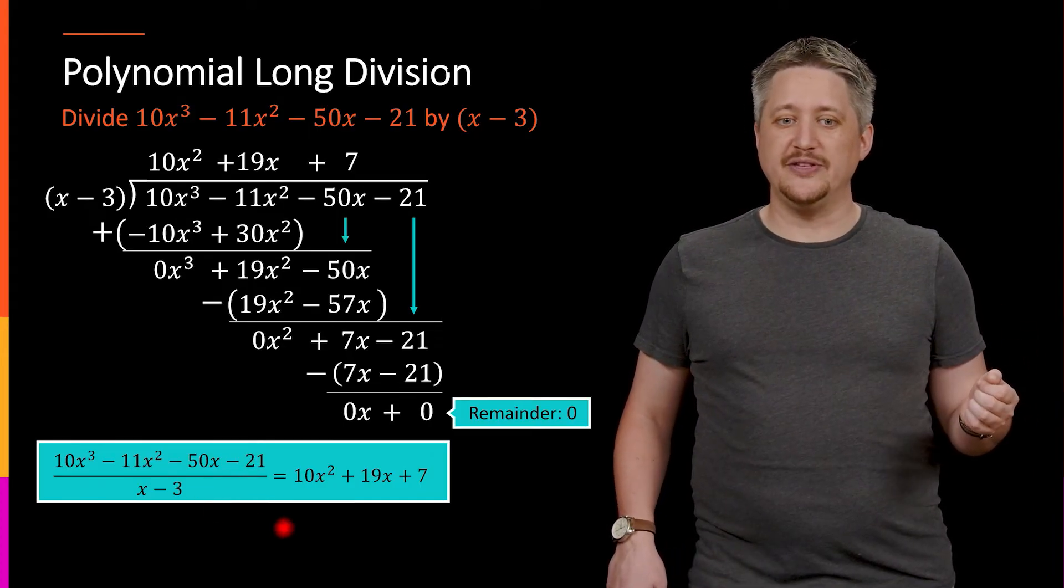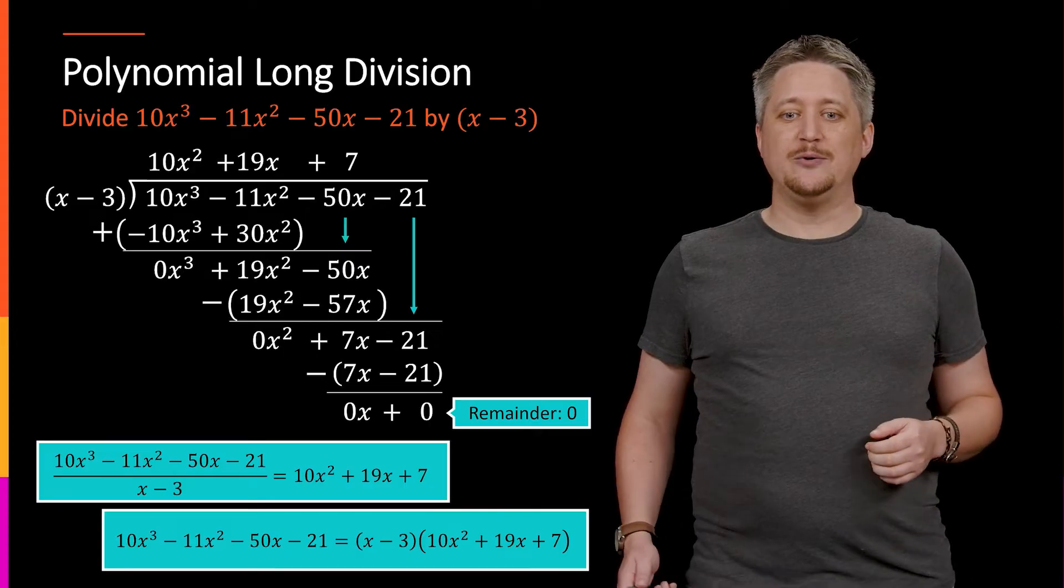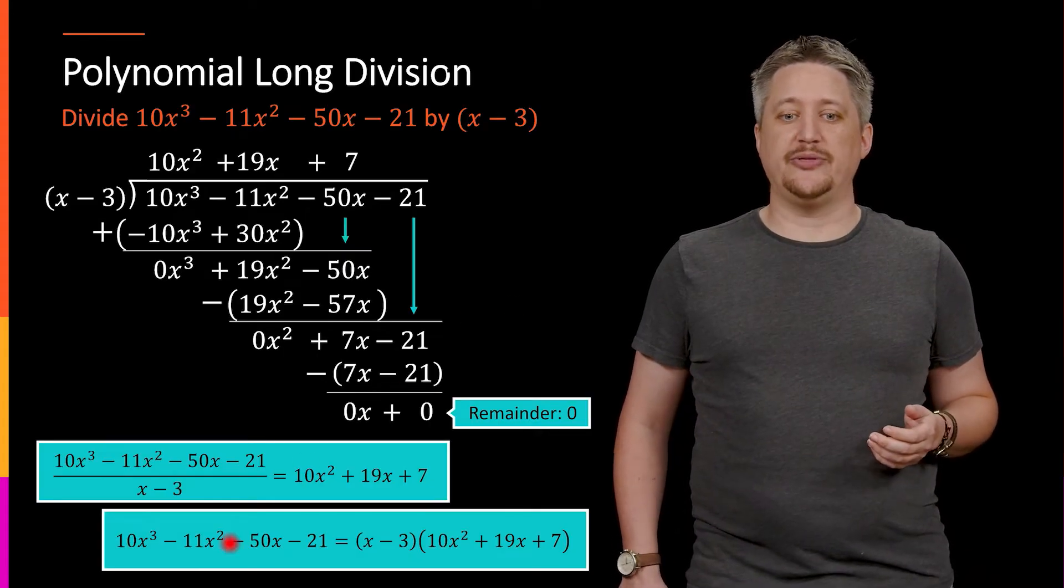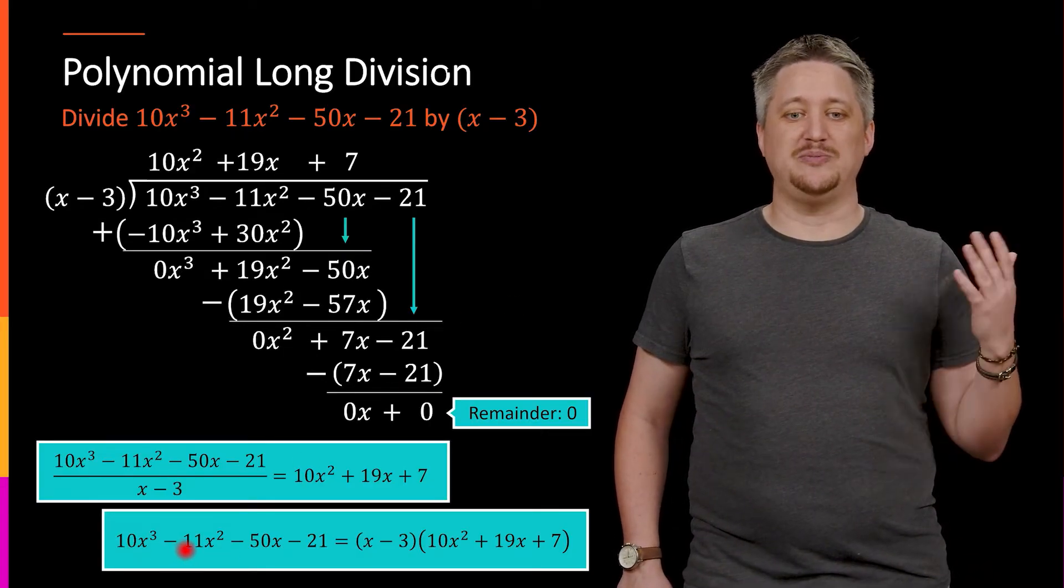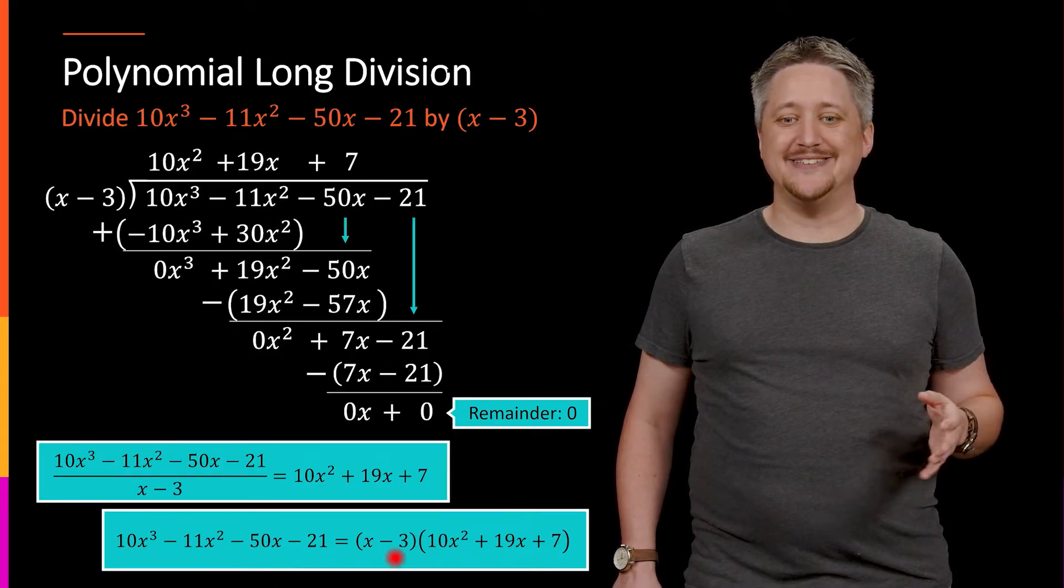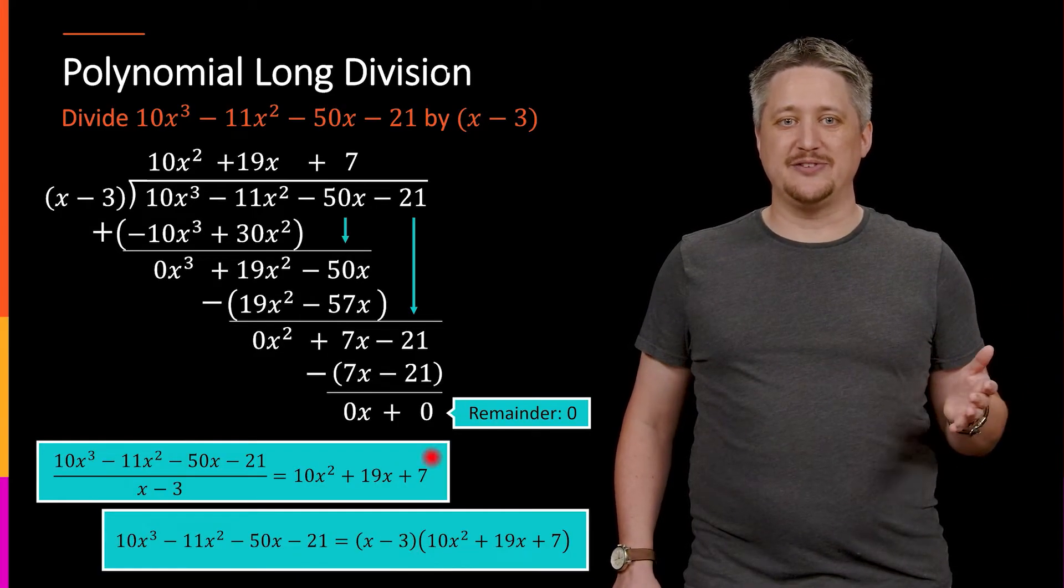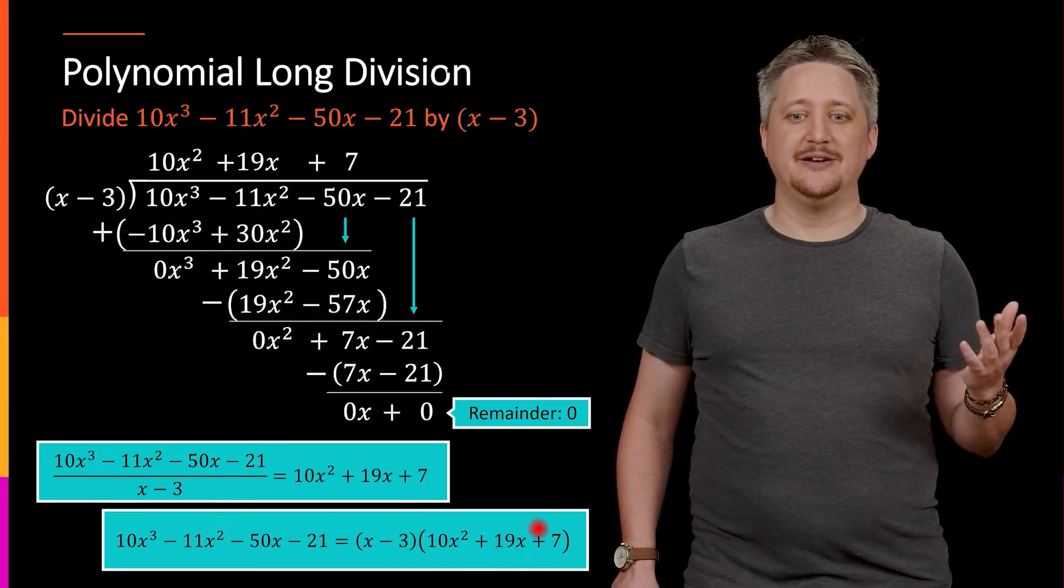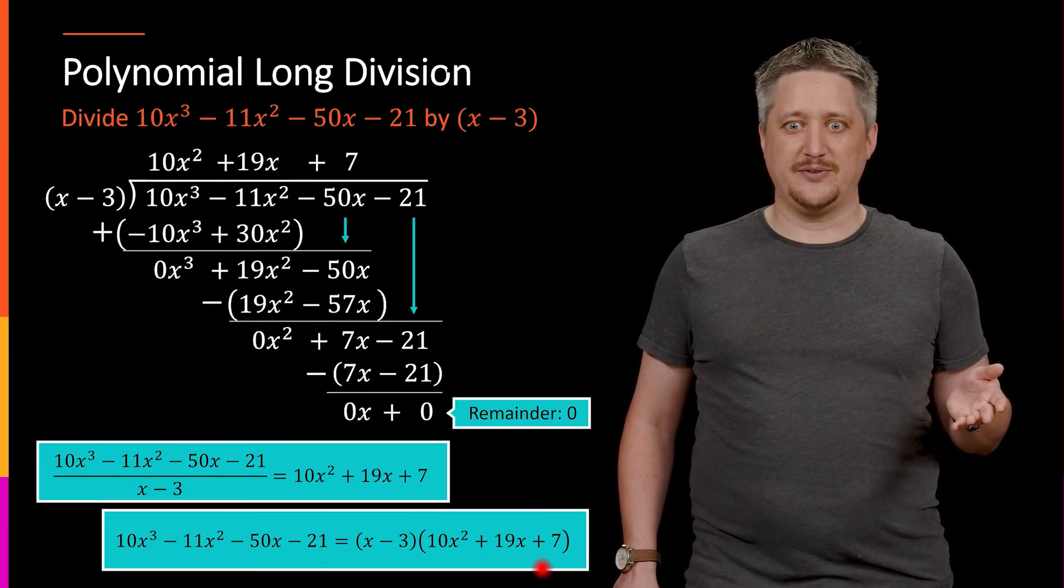the more useful thing would be to move this x - 3 over and say, we can factor our original thing, this 10x³ - 11x² - 50x - 21 as (x - 3) times the thing we got at the top here, 10x² + 19x + 7.